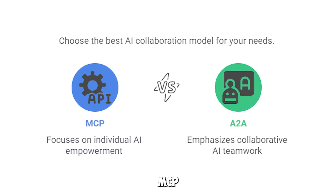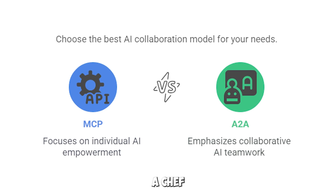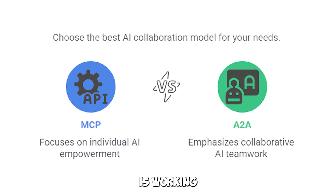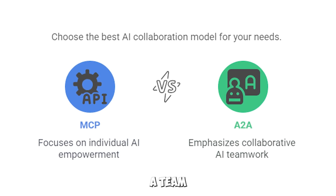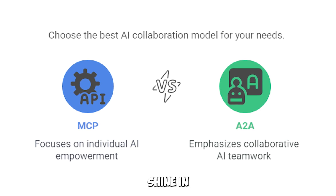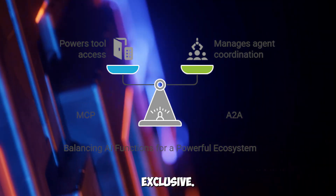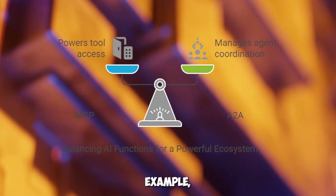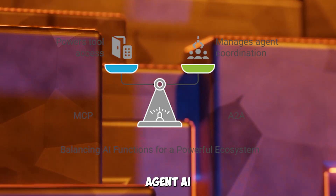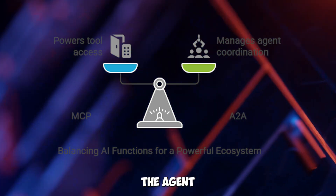The key difference: MCP is about giving a single AI the context it needs to act smarter — like a chef with access to every ingredient in the kitchen. A2A is about multiple AIs working together, like a team of chefs passing dishes to create a gourmet meal. Both are powerful but shine in different scenarios. MCP and A2A aren't mutually exclusive — they're complementary. In the trip planning example, MCP could power each agent's tool access, like querying flight APIs, while A2A handles the agent-to-agent coordination. Together, they create a powerhouse AI ecosystem.